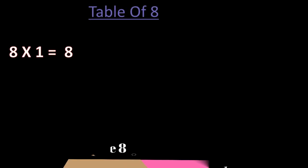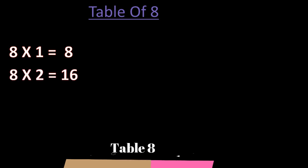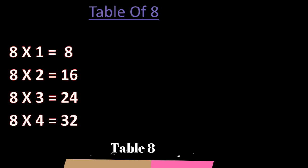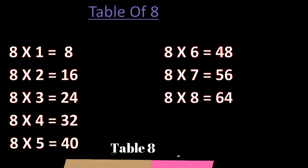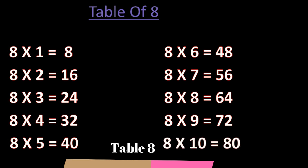Table of 8. 8 ones are 8. 8 twos are 16. 8 threes are 24. 8 fours are 32. 8 fives are 40. 8 sixes are 48. 8 sevens are 56. 8 eights are 64. 8 nines are 72. 8 tens are 80.